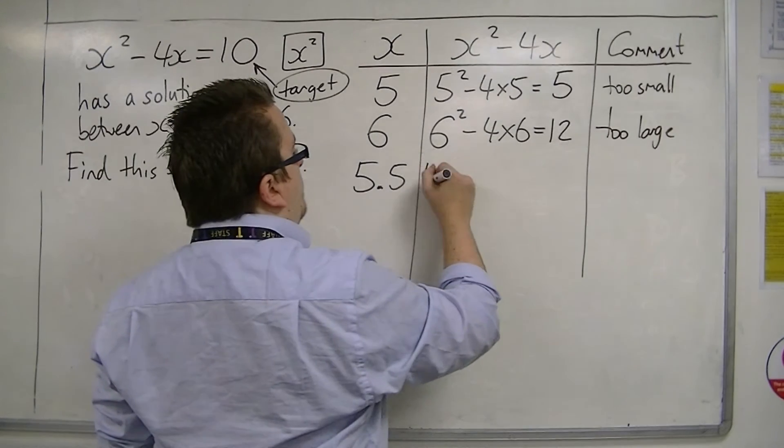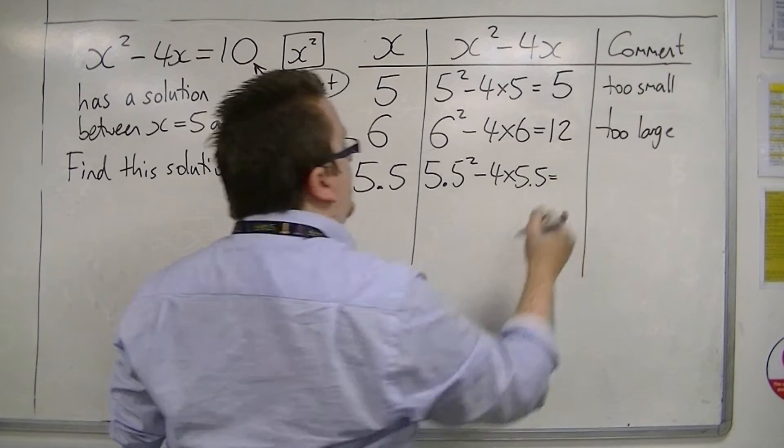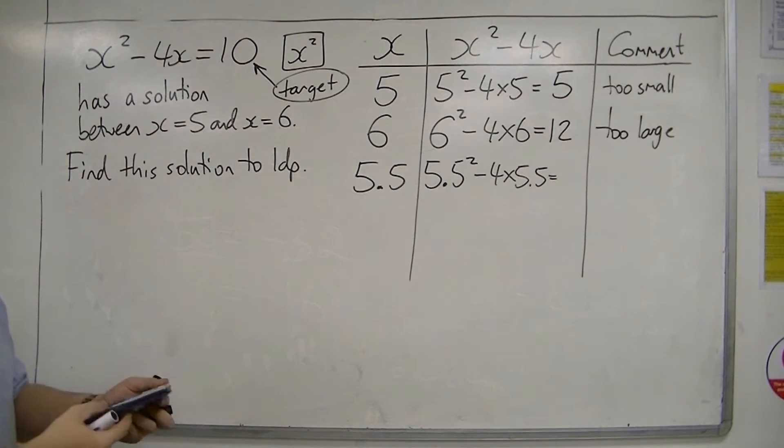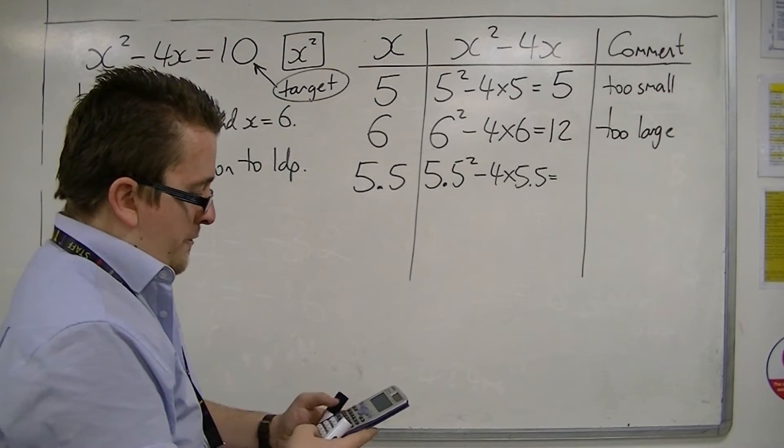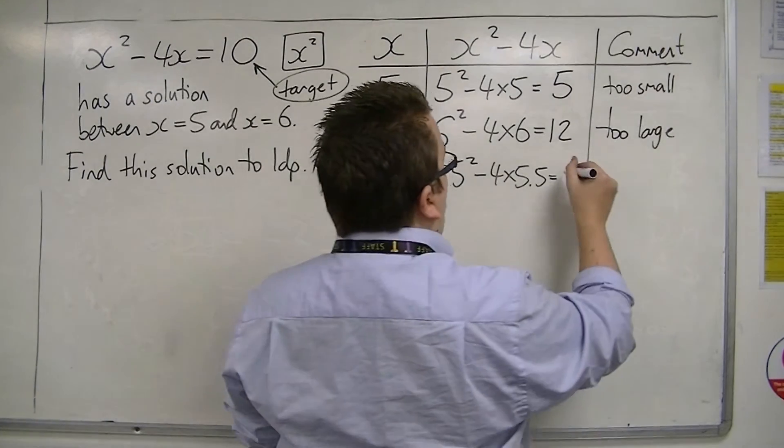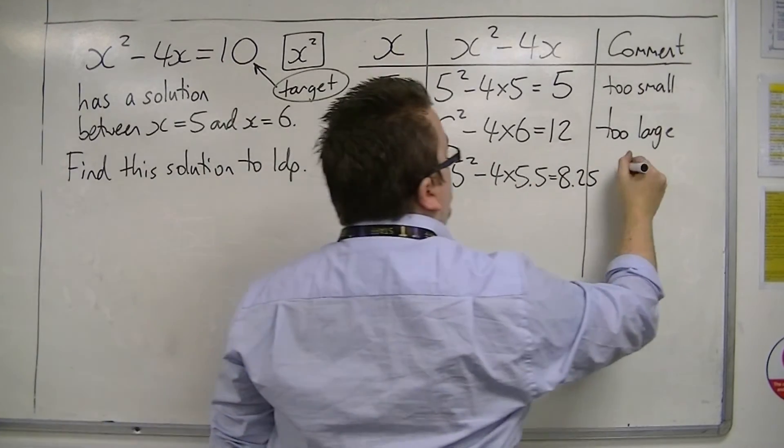So we've got 5.5 squared, take away 4 lots of 5.5. So you can see this is why you need a calculator. 5.5 squared, take away 4 lots of 5.5, is 8.25. So 8.25 is smaller than 10, so that's too small.